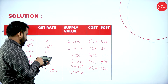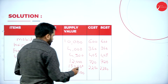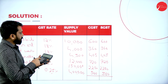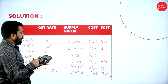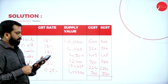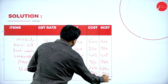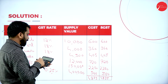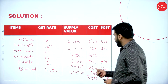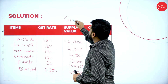Diamond — 4,00,000 into 0.25 percent divided by 2 equals ₹500 and ₹500. Total CGST: 500 + 360 + 405 + 720 + 2,250 + 500 equals ₹4,835. CGST and SGST are each ₹4,835 — the heading must be GST payable. Please take a screenshot of Problem 5.